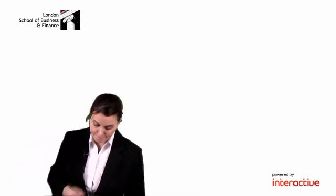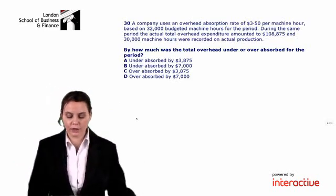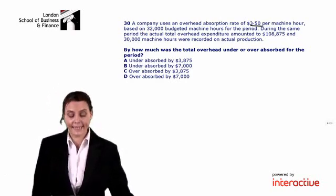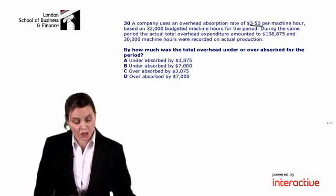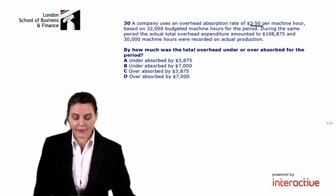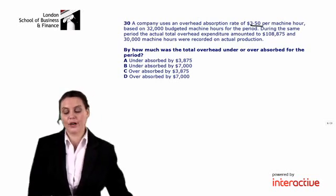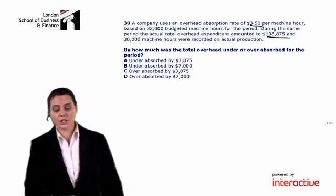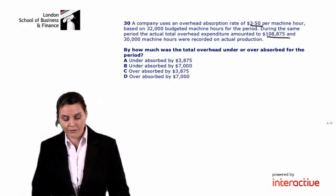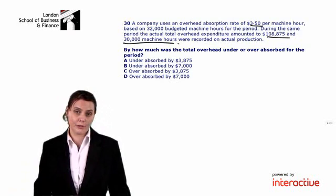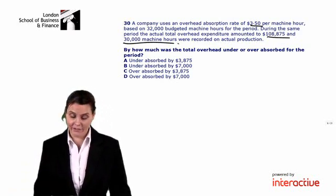We're told a company uses an overhead absorption rate of $3.50 per machine hour, based on 32,000 budgeted machine hours for the period. During the same period, the actual total overhead expenditure — our actual overhead cost — was $108,875. And 30,000 machine hours were recorded on actual production, so that was our actual activity.